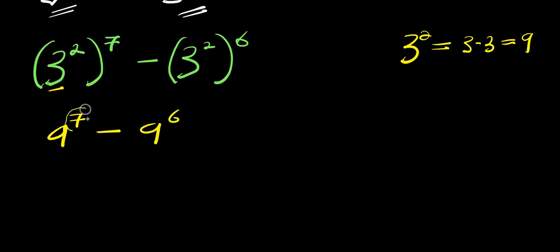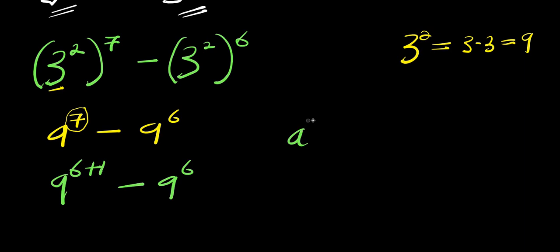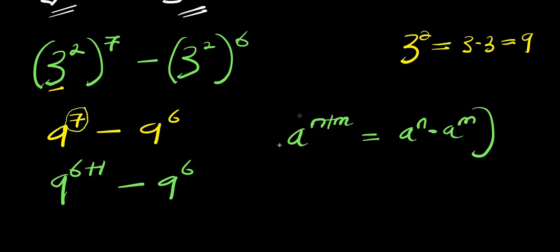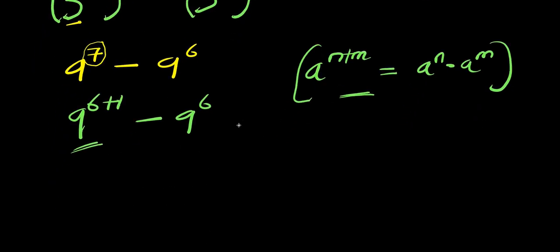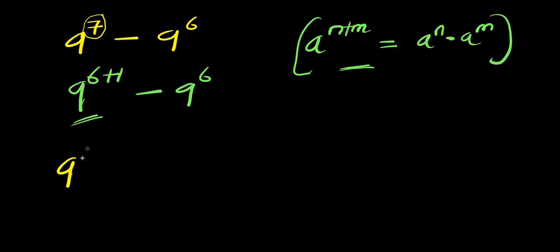Now we can express 7 as the sum of 6 and 1. So we have nine to the power six plus one, minus nine to the power six. Using the identity a to the power n plus m equals a to the power n times a to the power m, we apply this here, giving us nine to the power six times nine to the power one, minus nine to the power six.